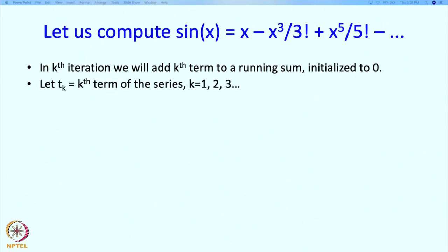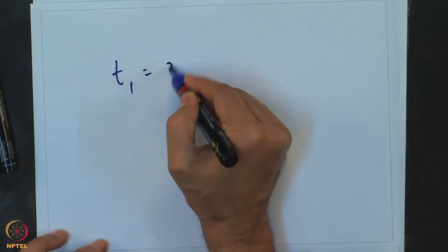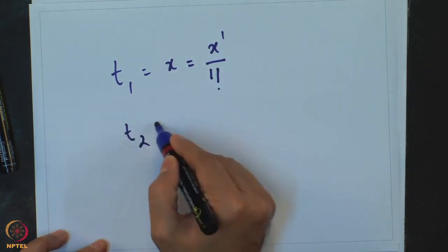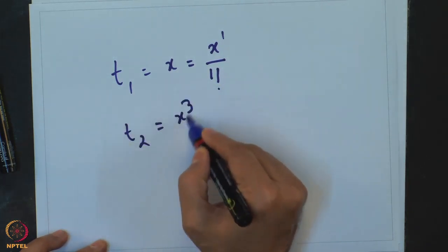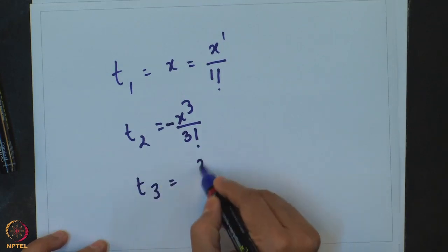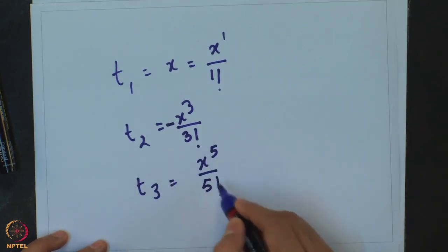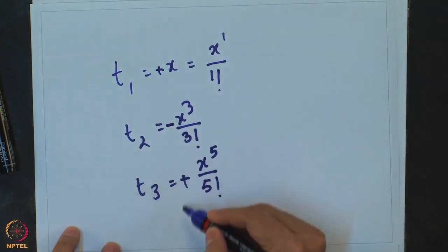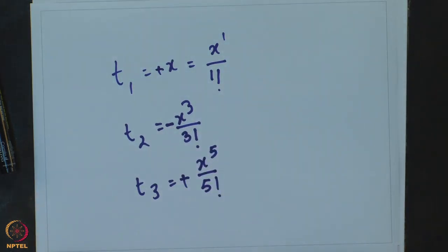Let us use T_k to denote the kth term of the series for k = 1, 2, 3 and so on. Looking at the sum: T1 = x (or x¹/1!), T2 = −x³/3!, T3 = +x⁵/5!. The first sign is plus, then minus, then plus — the plus and minus signs are going to alternate.